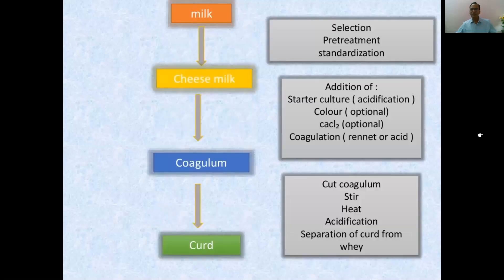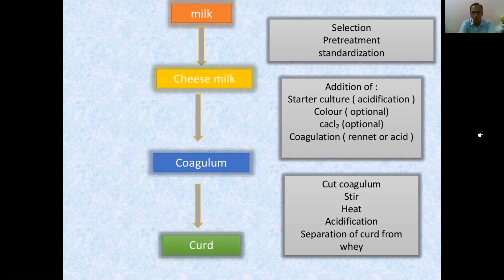This is the process flow diagram showing how cheese is made. Milk is taken through selection, pretreatment, and pasteurization to form cheese milk. We add starter culture, color (optional), and calcium chloride, then coagulation is done by rennet or acid to get the coagulum. The coagulum is cut, stirred, heated, acidified, and the curd is separated from the whey.